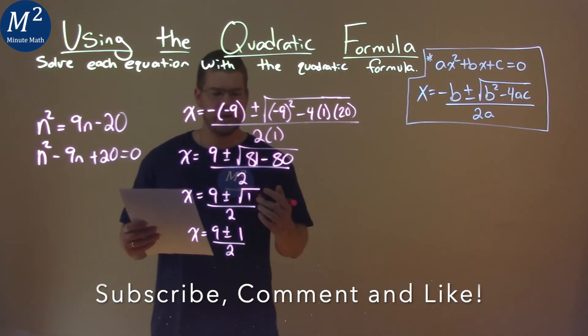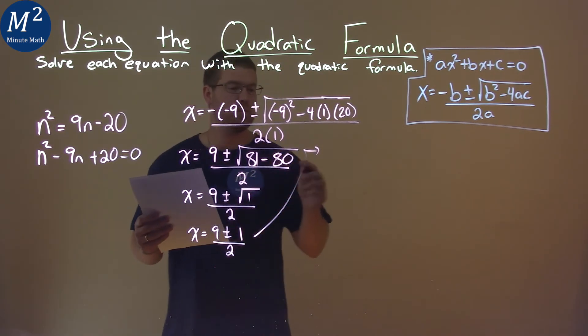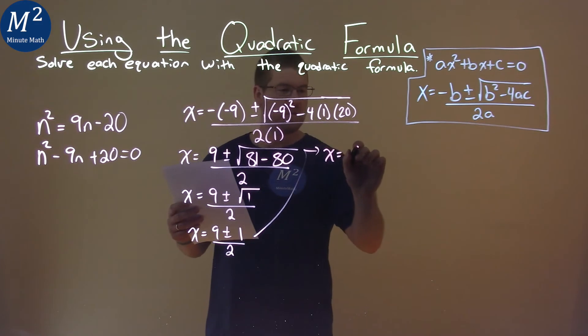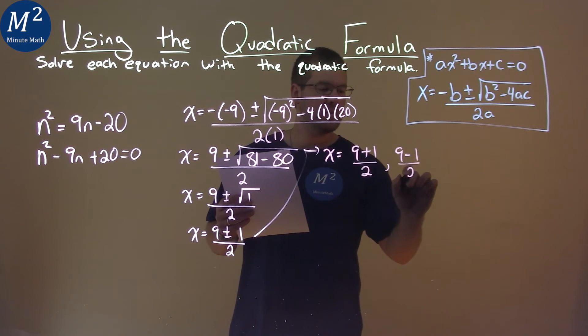So now from here we can break this to solve each part individually, the plus and minus, and that's what I can do here. x equals 9 plus 1 over 2, and 9 minus 1 over 2.